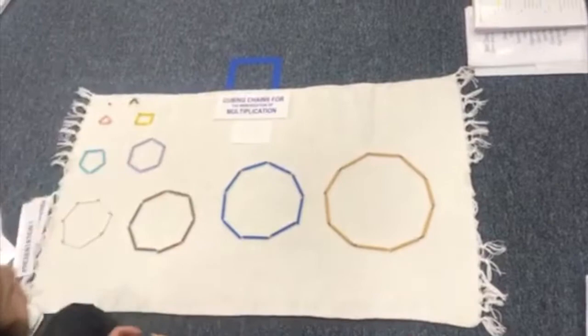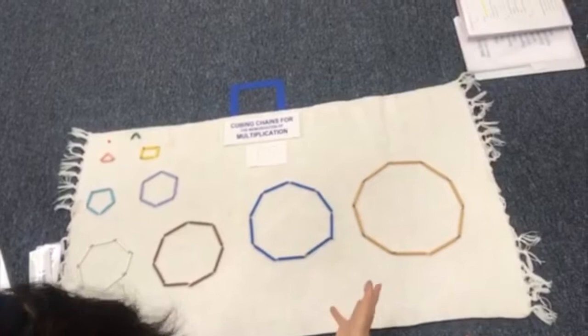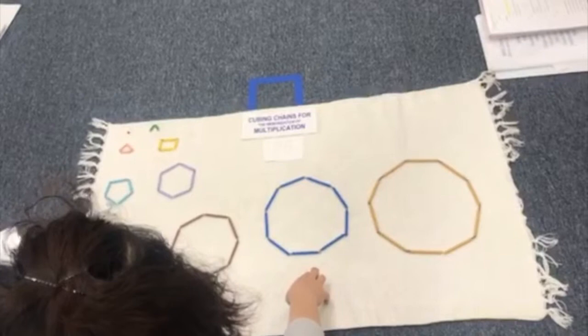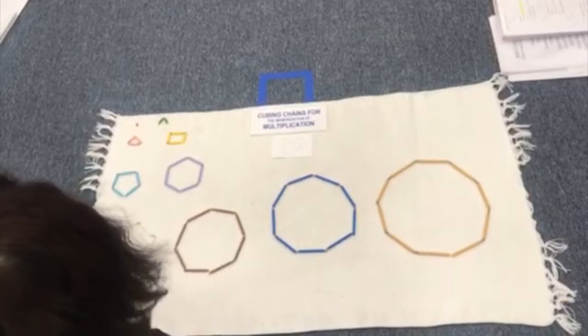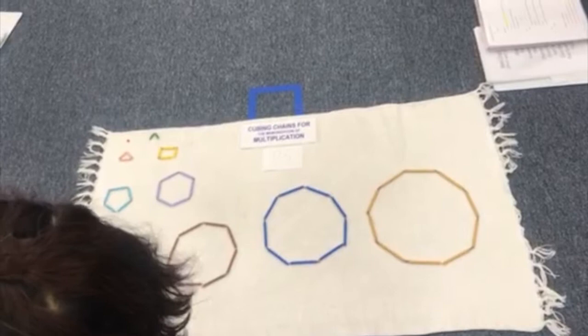Decagon is ten sides, right? Nonagon has nine sides. Octagon has eight sides. Septagon has seven. Hexagon is six. Pentagon is five. Square, four. Triangle is three. We only have a two. That's an angle. And then one.